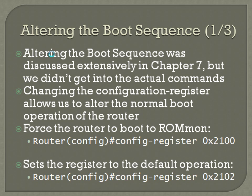Starting off with altering the boot sequence. We discussed this extensively in Chapter 7, but we didn't really get into the actual commands for modifying the configuration register. Changing the configuration register allows us to alter the normal boot operation of the router. So if we want to force the router to boot to ROMMON, we would need to change the configuration register. It's normally set to 0x2102 with normal operation.